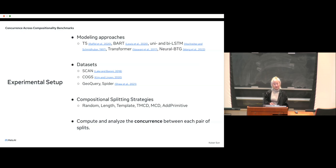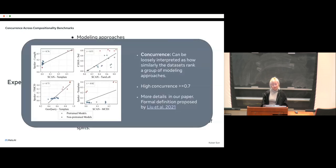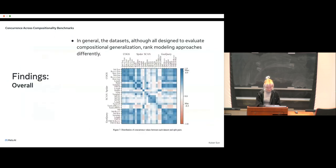For experiments, we select six different modeling approaches, including pre-trained and non-trained-from-scratch ones, as well as specialized architecture designed for compositional generalization. We use four different data sets. For each of the data sets, we split them with different compositional splitting strategies. With those data set splits in hand, we compute and analyze the concurrence between each pair of the resulting splits. The method we use, concurrence, can be loosely interpreted as how do the data sets agree with each other. In our settings, we set a threshold for high concurrence to be larger than or equal to 0.7. The figures on the right-hand slide shows an example of low concurrence values where these data sets do not give similar model rankings.